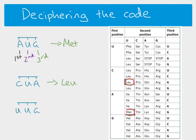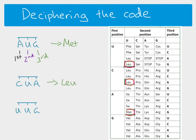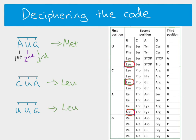For UUG: U is first position, U is second position, G is third position — where they intersect, it is again leucine. Looking at the table, you can see there are six different codons that give the amino acid leucine, demonstrating that the code is degenerate. That covers everything — thank you very much, hope that makes sense.